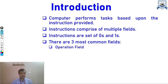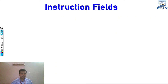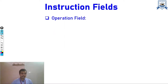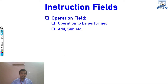There are three most common fields. The first is the operation field, the second is the address field, and the third is the mode field. The operation field basically tells about the opcode — the operation code — which tells about what operation is to be performed.